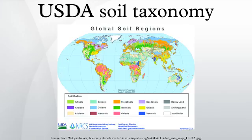Soil Orders. Example of classification of a soil type: order — Entisols; suborder — Fluvents; great group — Torifluvents; subgroup — Typic Torifluvents; family — fine-loamy, mixed, superactive, calcareous, Typic Torifluvents; series — Josety, Youngston.